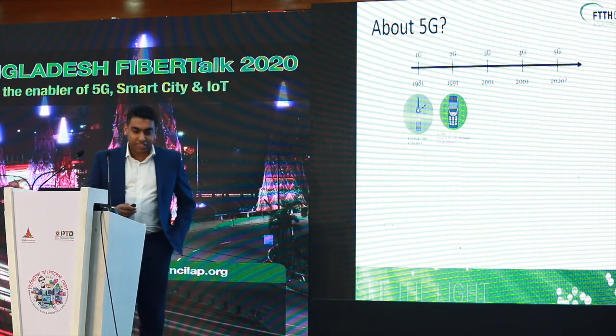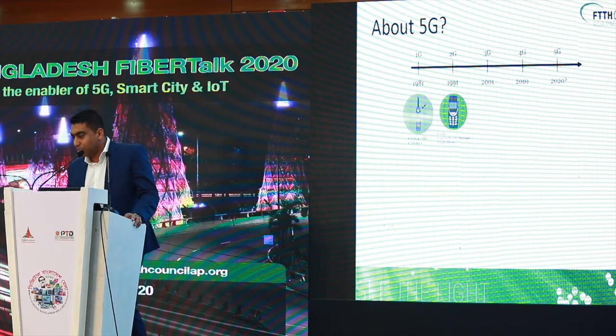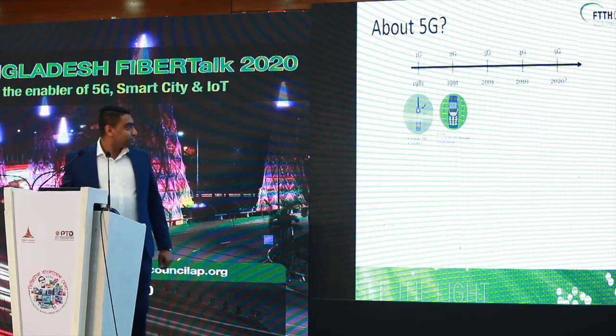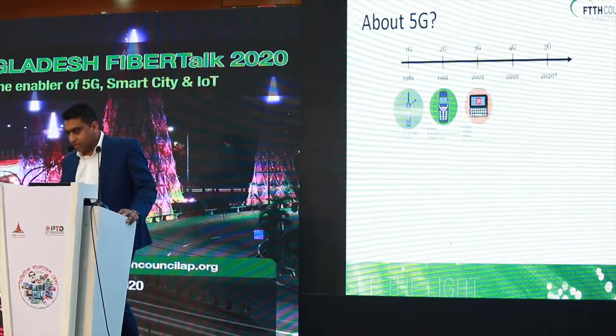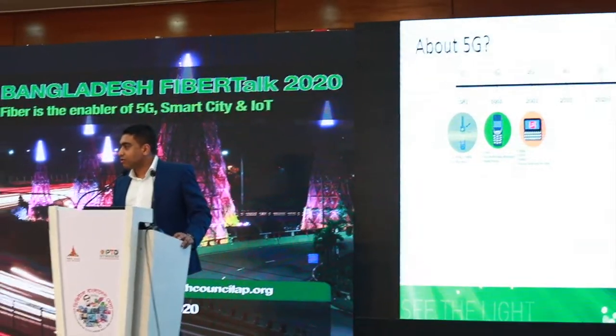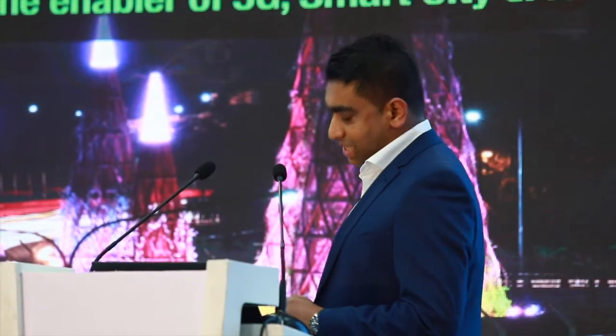In 1991, we had GSM — 2G — where we could not only talk using our mobile phone, we could send texts. In 2001, 3G came along, letting us access email and giving us just enough ability to experience how the future would look like — a bit of mobile data. In 2010, 4G came and we had an experience where we could do computer-like work using our mobile phones. It's a pattern that's been there for a long time — every 10 years is the transition.